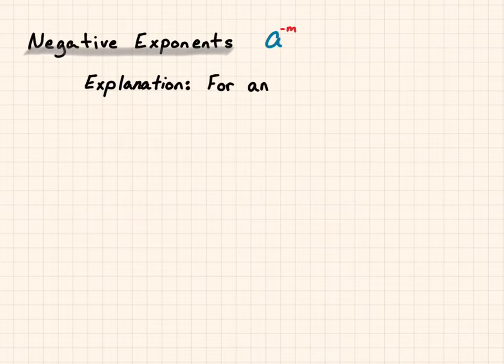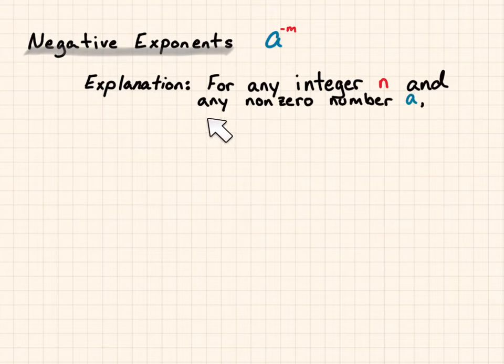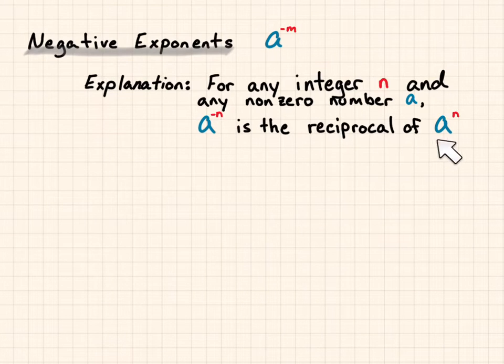Explanation is this. For any integer n and any non-zero number a, a to the negative n is the reciprocal of a to the n.